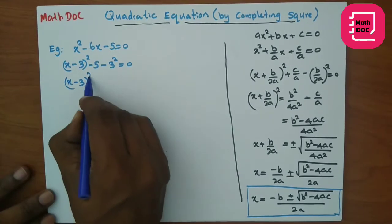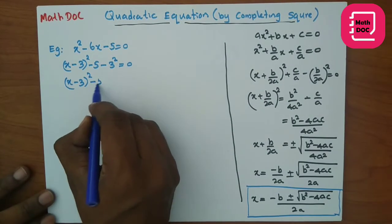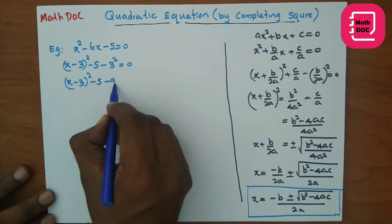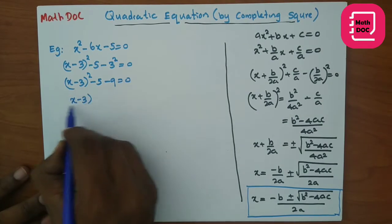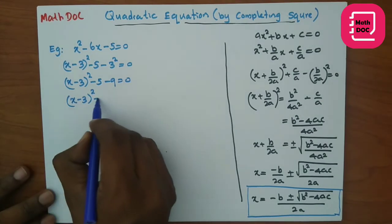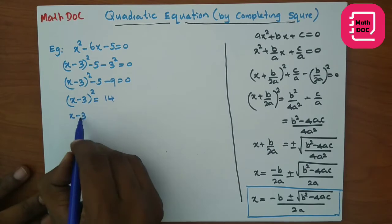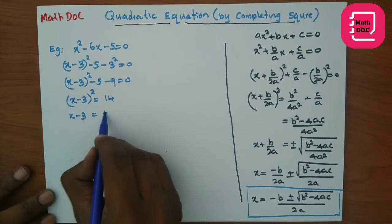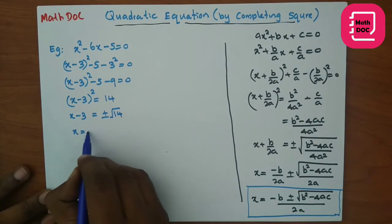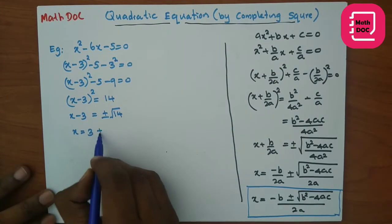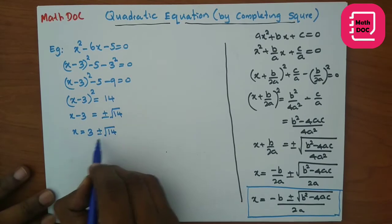Then: (x - 3)² - 5 - 9 = 0, so (x - 3)² = 14. Then x - 3 = ±√14, giving x = 3 ± √14.